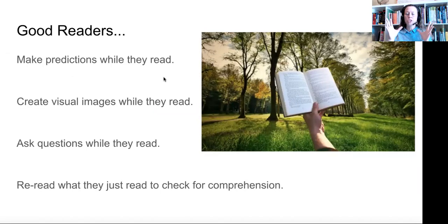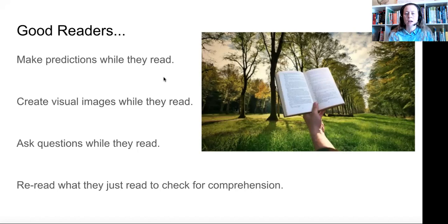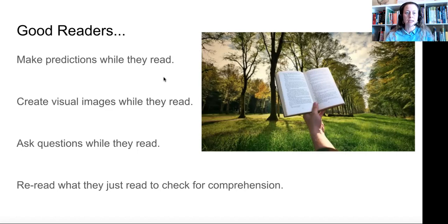Number two, they create visual images while they read. As you read, you have a picture in your mind of what is happening in the story. Good readers also ask questions while they read. You may think, hmm, why is he doing that exactly? And you can write down your question on a little note as you read — it's a good strategy. Another strategy is to reread what you just read to check if you understood it. Oftentimes, we read things very quickly or we're distracted and didn't really understand. In that case, we can go back and read it again. As we read the book today, I'll be going through these reading strategies with you.